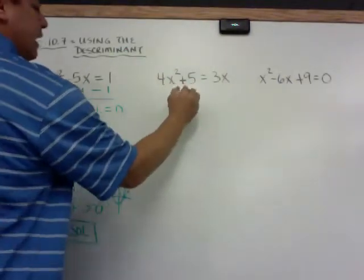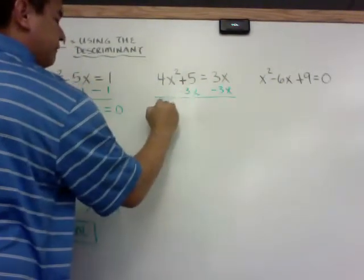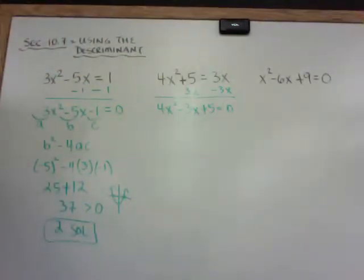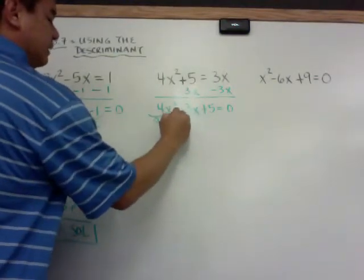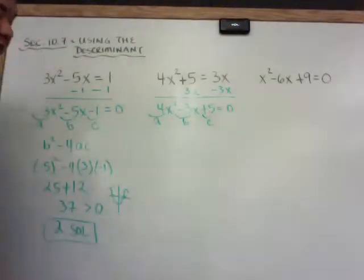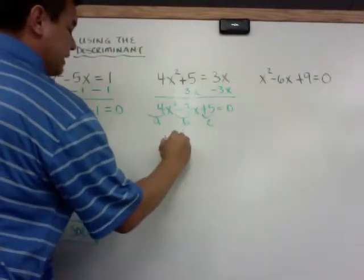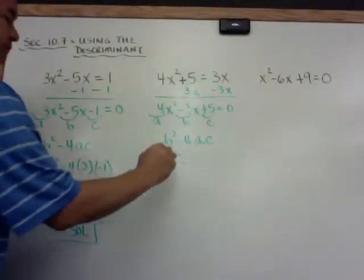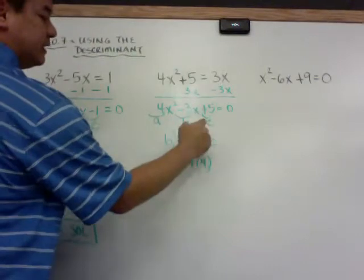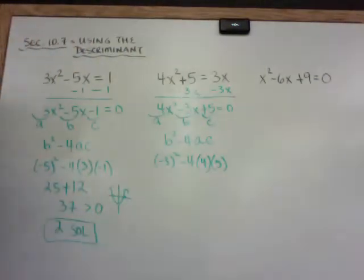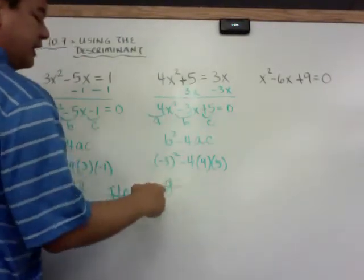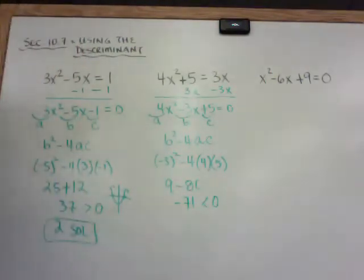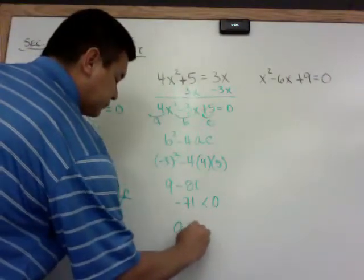Here's the second equation. I subtract 3x from both sides to make it equal to zero, giving me 4x² minus 3x plus 5 equals zero. I put the minus 3x before the plus 5 to keep it in standard form. So a is 4, b is negative 3, and c is 5. The discriminant is b squared minus 4ac: negative 3 squared minus 4 times 4 times 5. That's 9 minus 80, which is negative 71 — less than zero. So I know I'm going to have zero solutions.